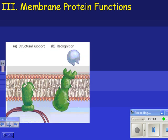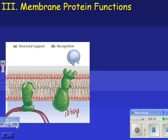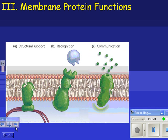Recognition — these would be ID tags. This is a special shape, and maybe it says, 'I belong to Johnny, and I belong to Johnny's liver,' for example. So it's an ID tag.